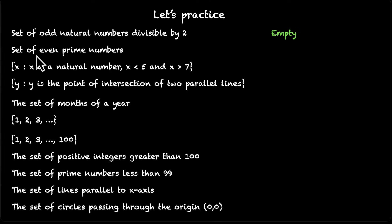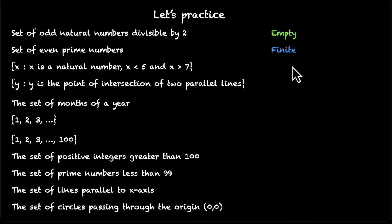Set of even prime numbers. Almost all primes are not even, but there's one prime that is even, which is the number 2. So this set is not empty — this set has only one element. And you can count the number of elements, which means it's a finite set.